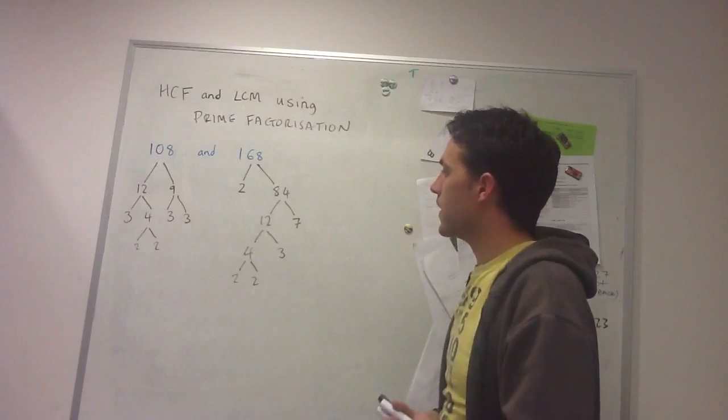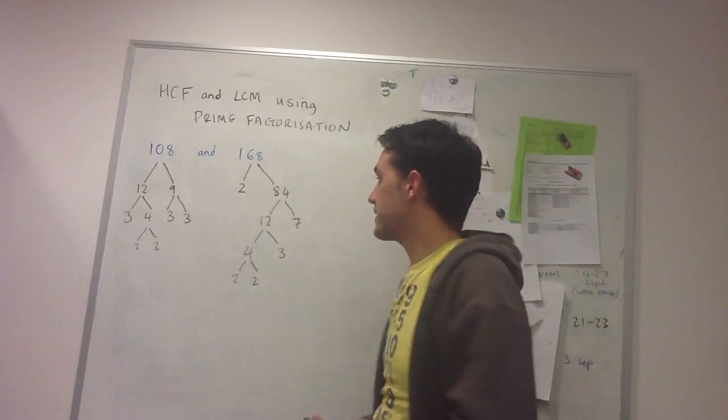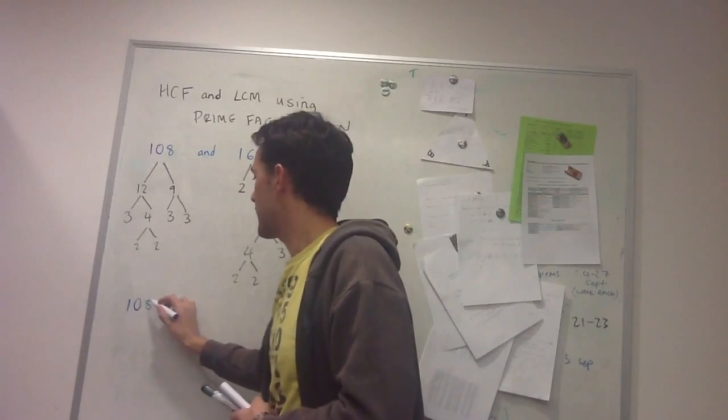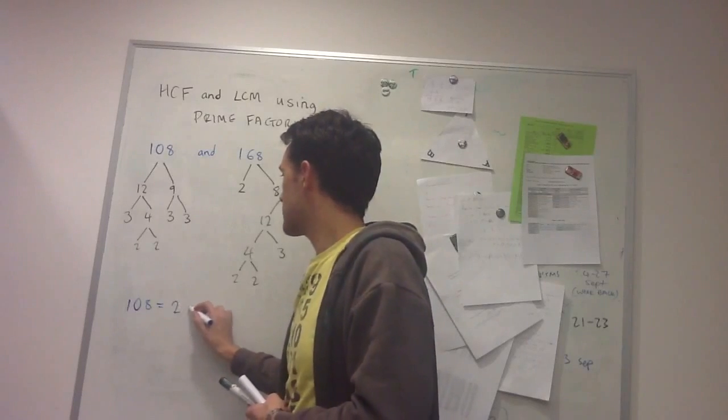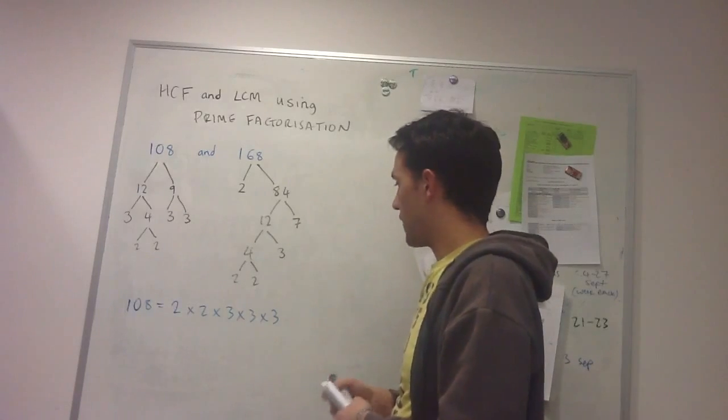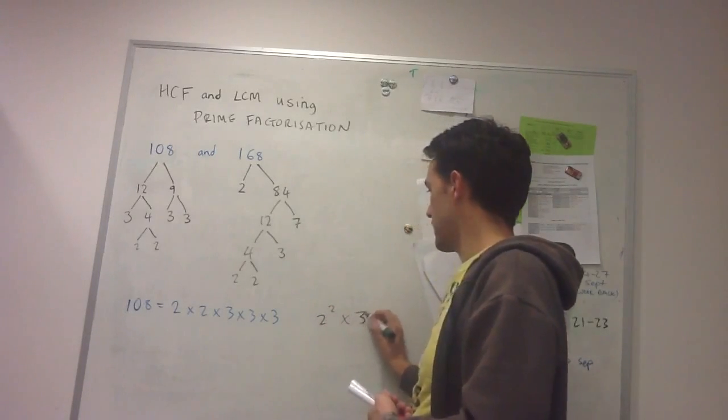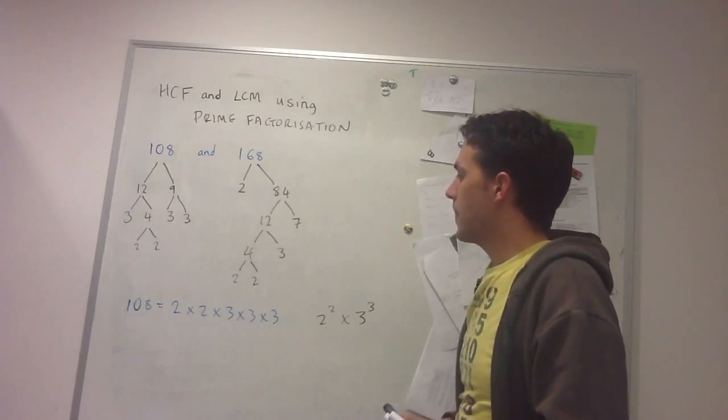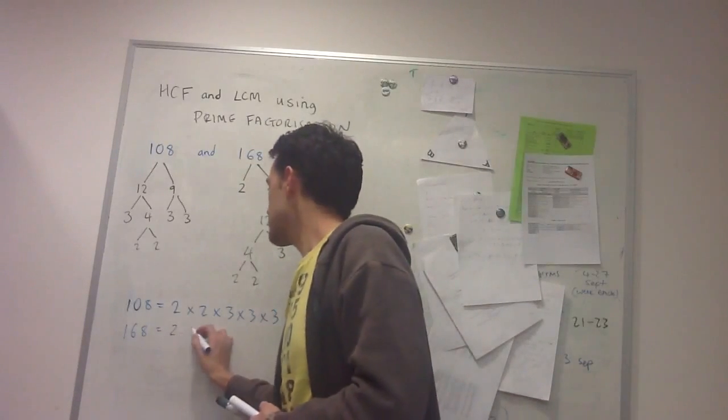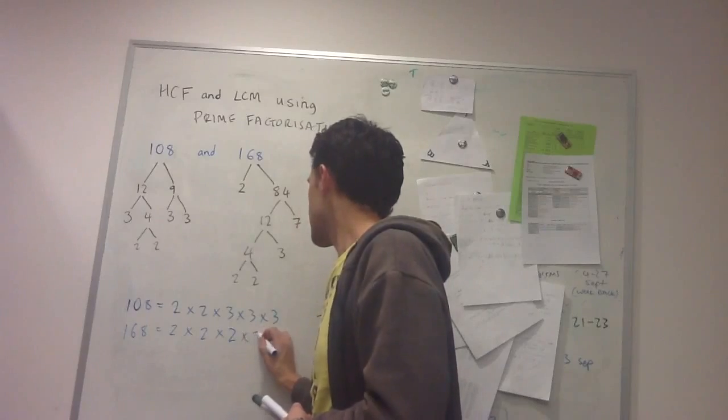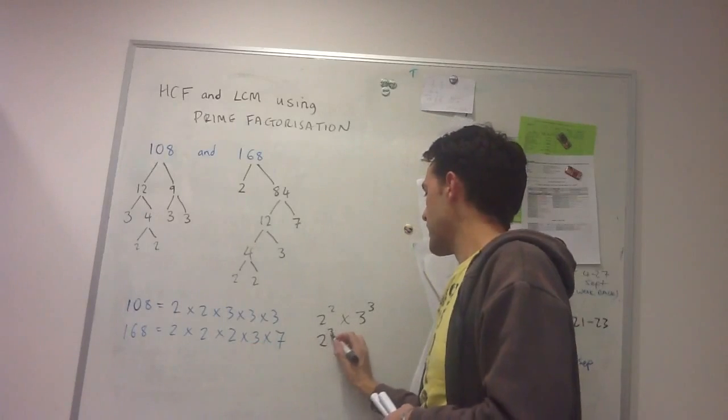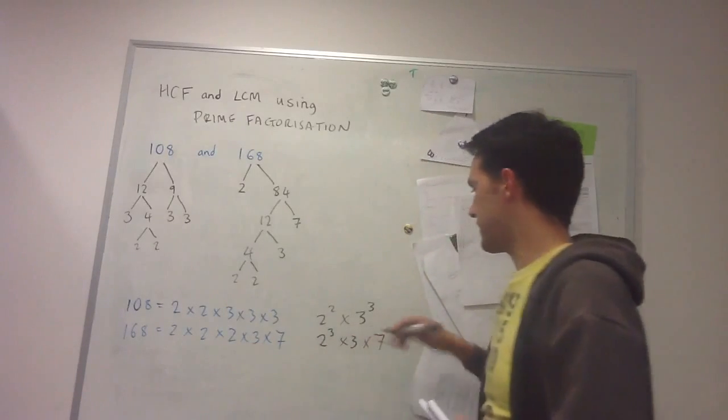So the prime factorizations I get for these two numbers are - for 108 it's equal to 2 times 2 times 3 times 3 times 3, or in exponential form that would be 2 squared times 3 cubed. And then 168 in its prime factorization is going to be 2 times 2 times 2 times 3 times 7, or 2 to the 3 times 3 times 7 in exponential form.